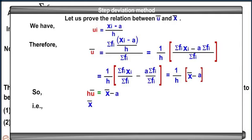That is, x bar equals a plus h into u bar. So, x bar equals a plus h into summation fi ui divided by summation fi.